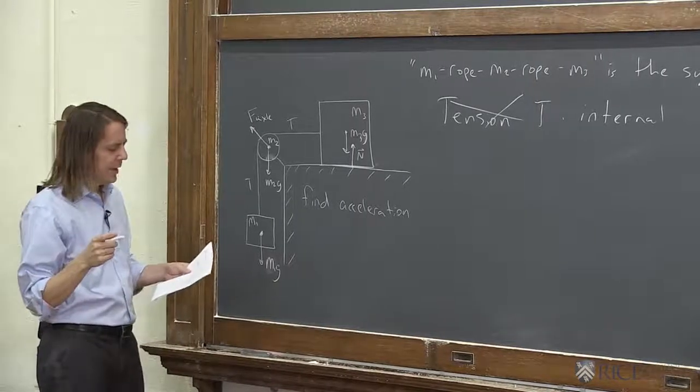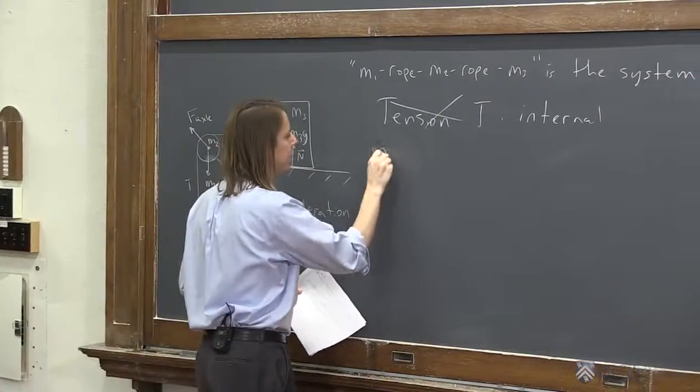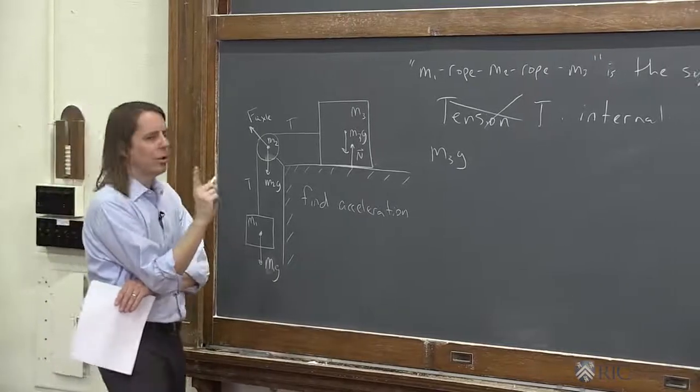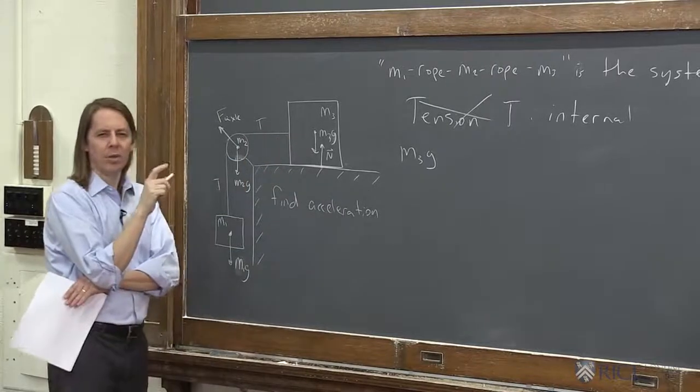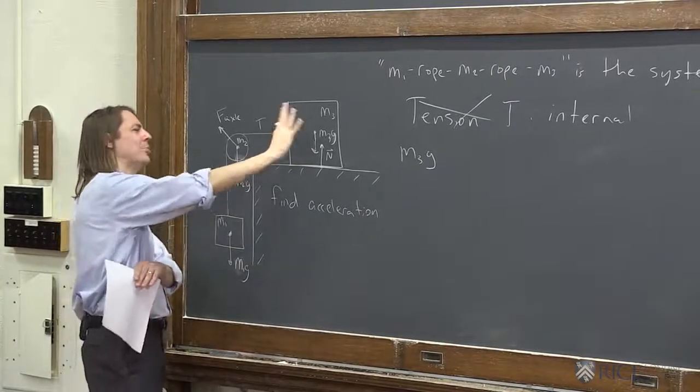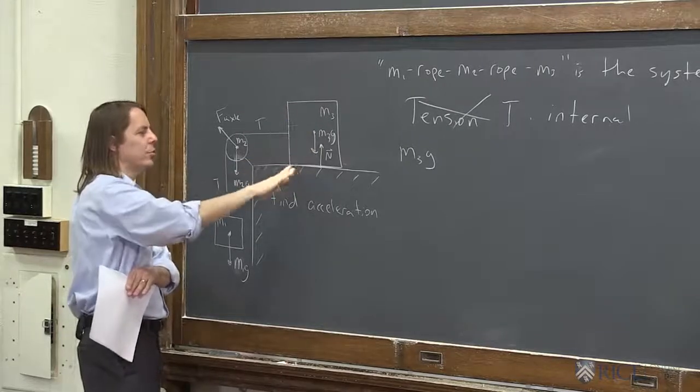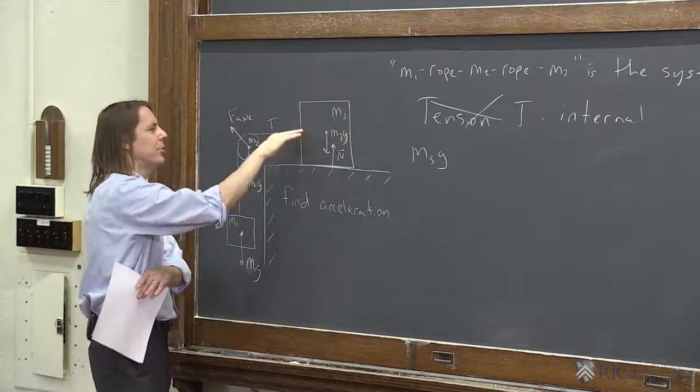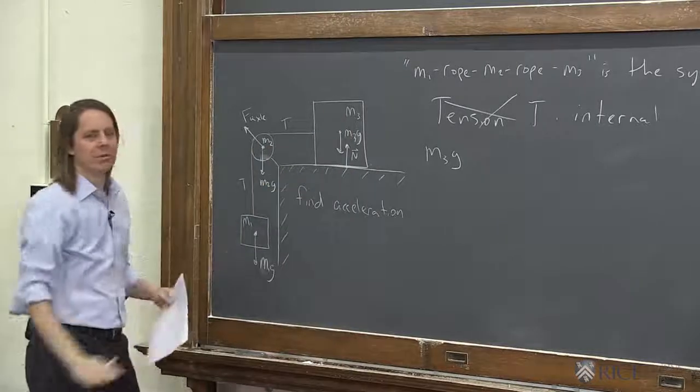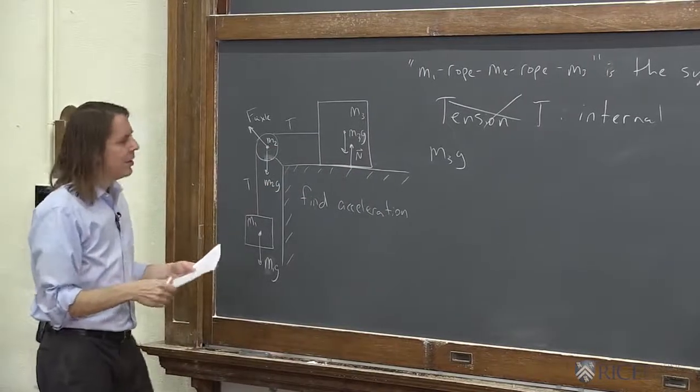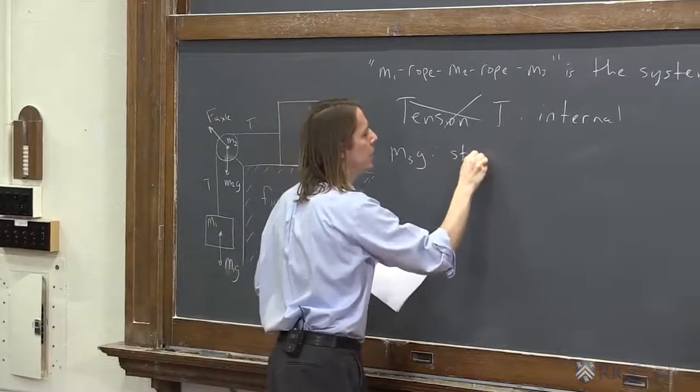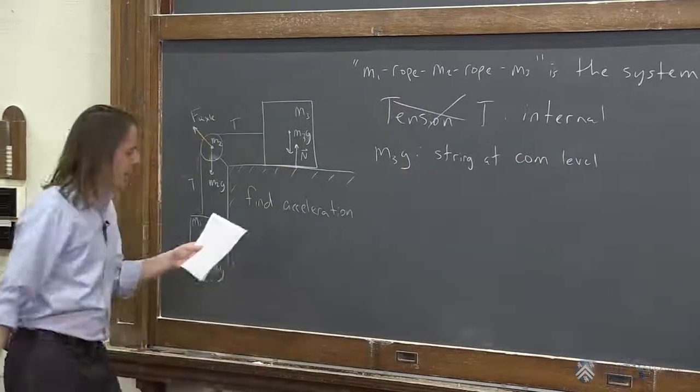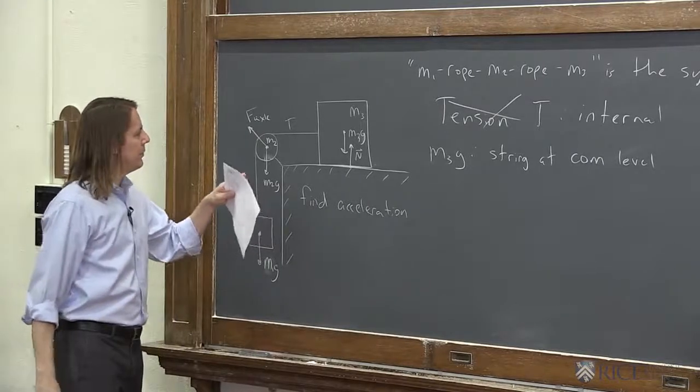Let's check as a geometrical exercise. So let's first do m3g. One thing that we don't have to do with this problem, but we're going to do, is we're going to have the string at the level of the center of mass of the block. If the string were up here, it would kind of be pulling the block over. Let's just, for simplicity, say the string is pulling along the center of mass of the block so that it pulls it nice and level. String at COM level.